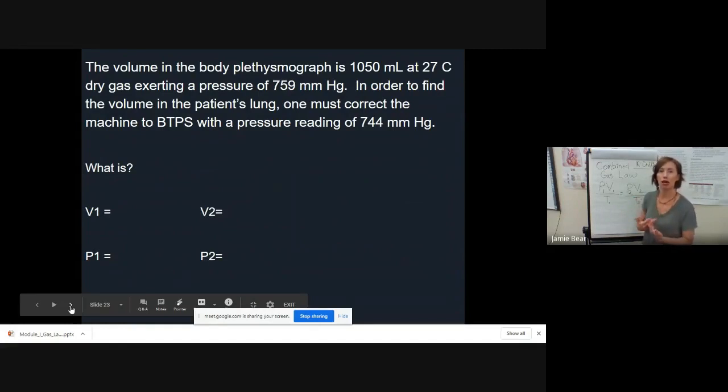The volume in the body plethysmograph, which is a big glass box that we sit the patient in, and it's completely sealed so that we know exactly what the pressure inside is, and then we'll measure our volume. The volume in the body box is 1050 milliliters at 27 degrees Celsius dry gas, exerting a pressure of 759. In order to find the volume in the patient's lung, one must correct the machine to BTPS with the pressure reading of 744.